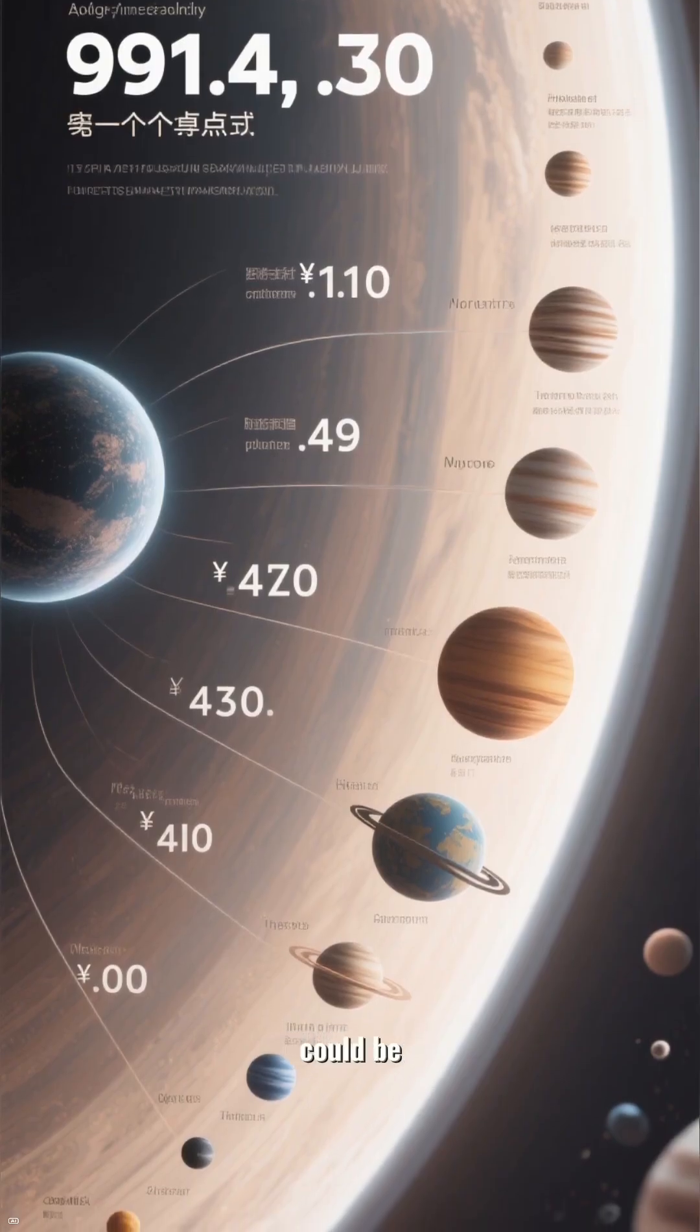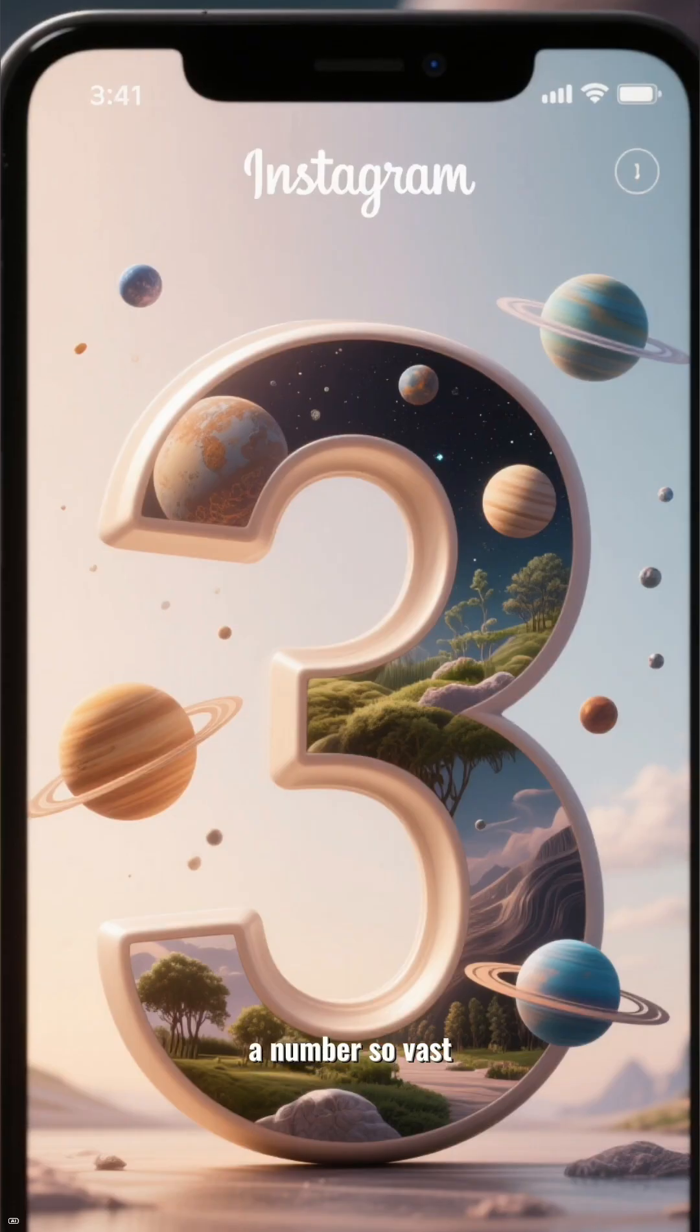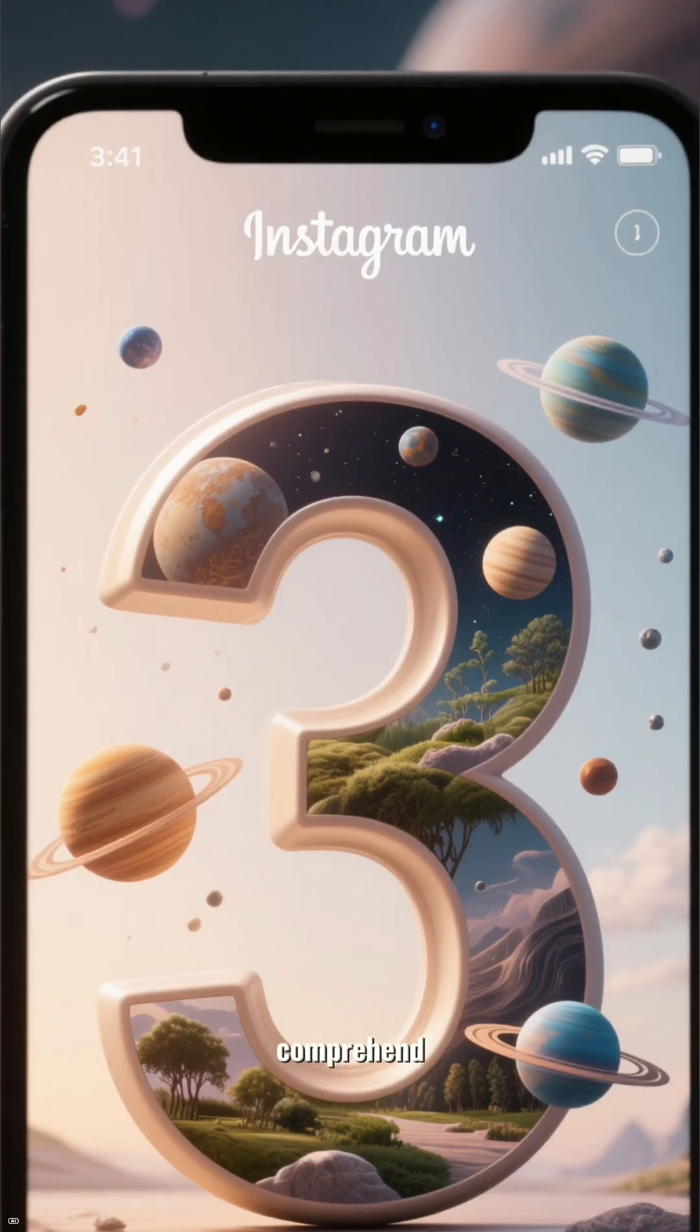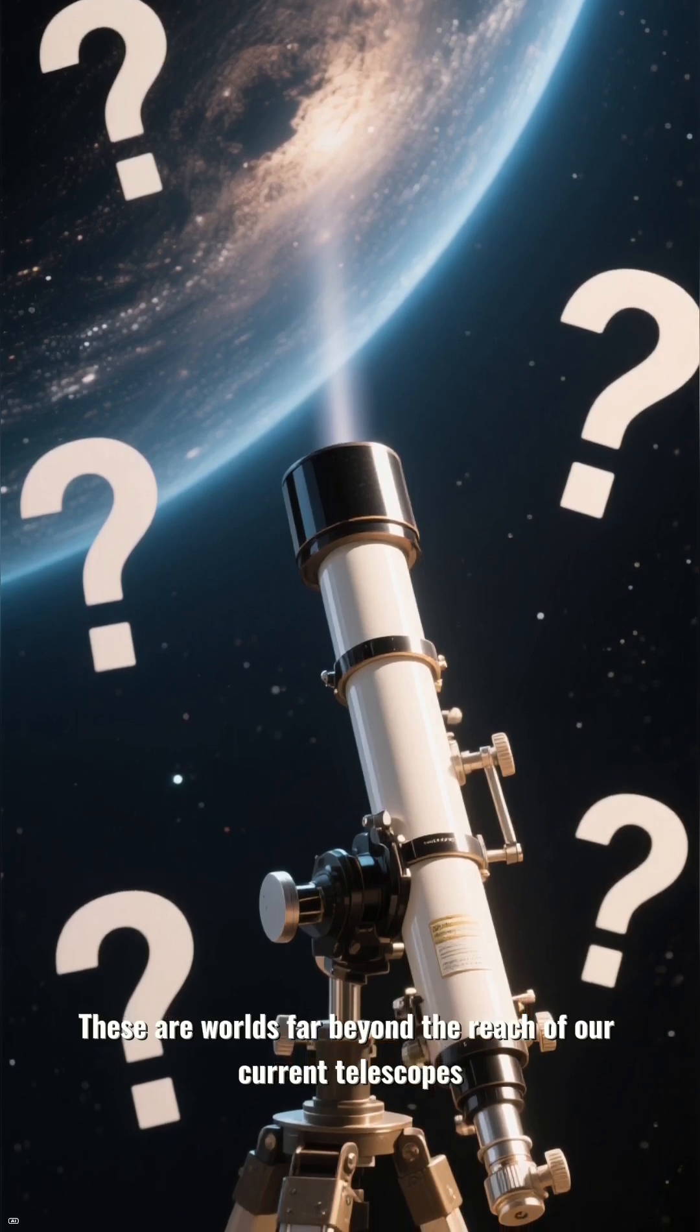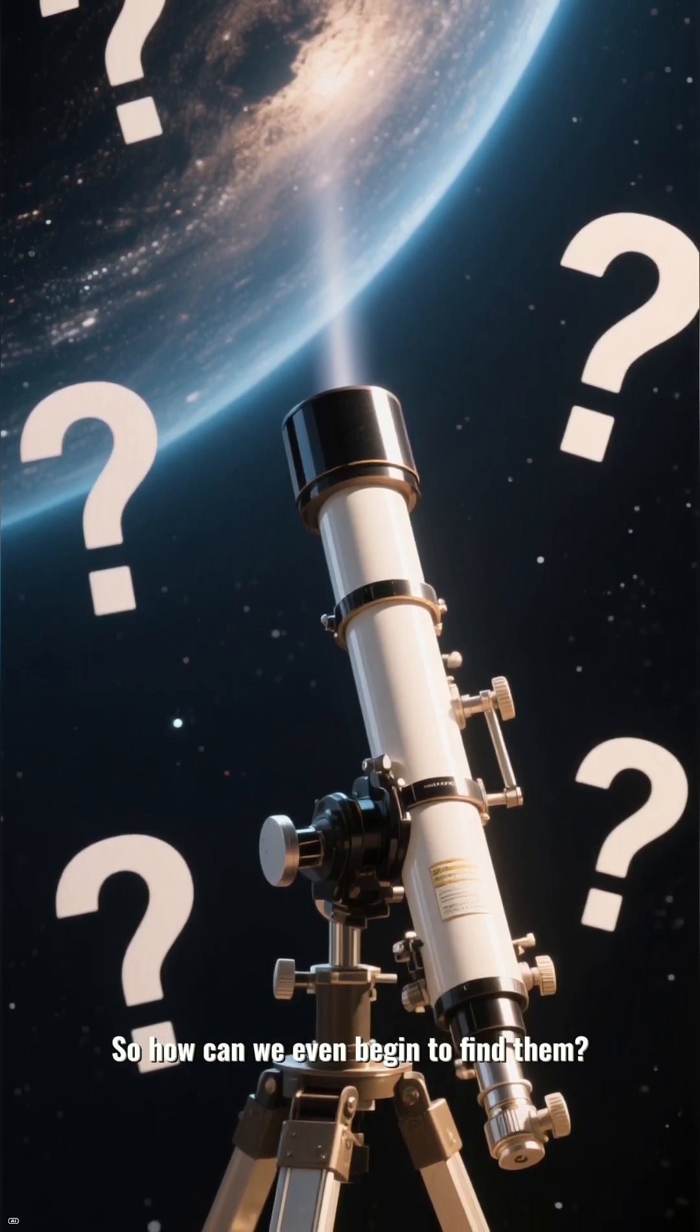Astronomers believe there could be trillions upon trillions of planets out there. A number so vast, it's hard to even comprehend. These are worlds far beyond the reach of our current telescopes. So how can we even begin to find them?